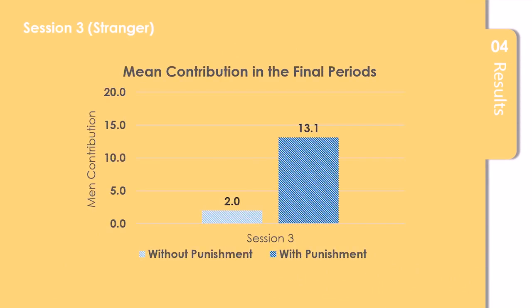Results show that, without punishment opportunities, the mean contribution in the final periods in session 3 was 2, while the number increased to 13.1 with punishment opportunities.